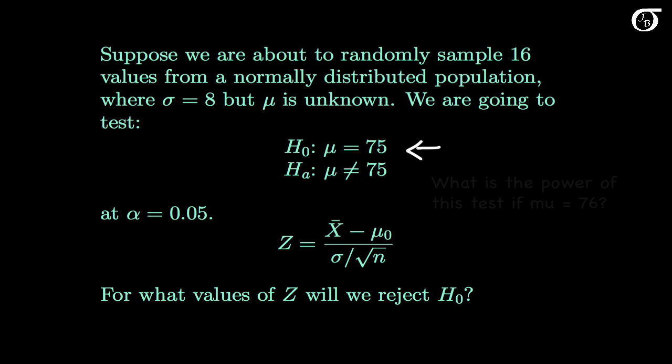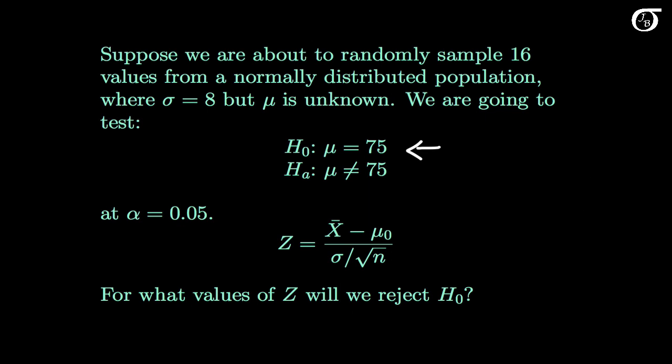We might be interested in a question like: what is the power of this test if the null hypothesis is wrong and the population mean mu is actually 76? We'll come back to this question in a moment, but first let's look at another couple of questions that will help us answer this. In this setting the appropriate test statistic is the z test statistic. For what values of z will we reject the null hypothesis?